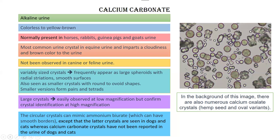Calcium carbonate is the most common urine crystal in equine urine and imparts a cloudiness and brown color to the urine. A regular healthy horse is going to have this crystal. In our previous lectures we talked about calcium oxalate monohydrate crystals, which are also present in healthy horse urine. You should remember these species-specific variations in physiology, because otherwise you might worry that these animals have stone or crystal issues — but this is normal physiology.